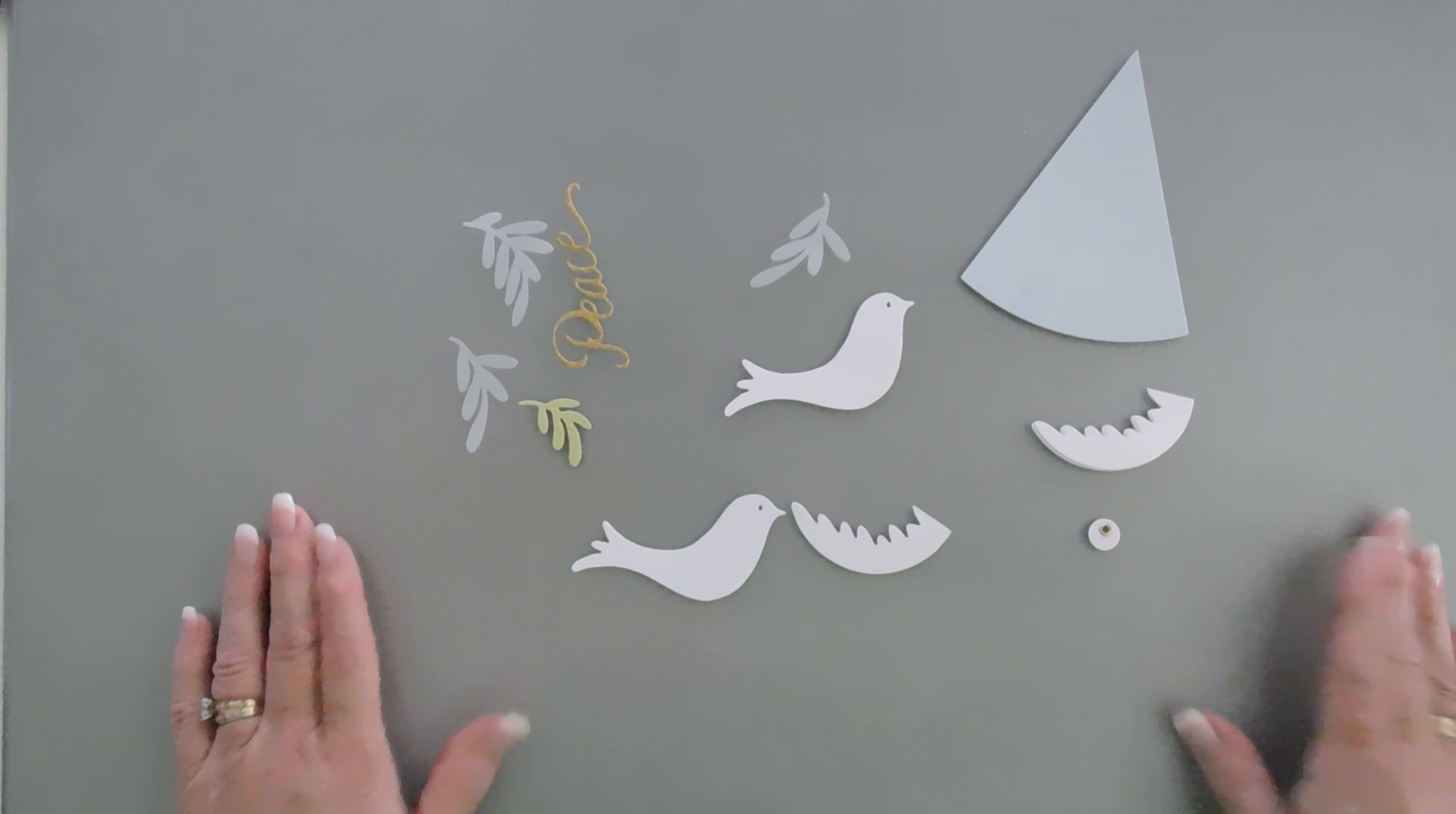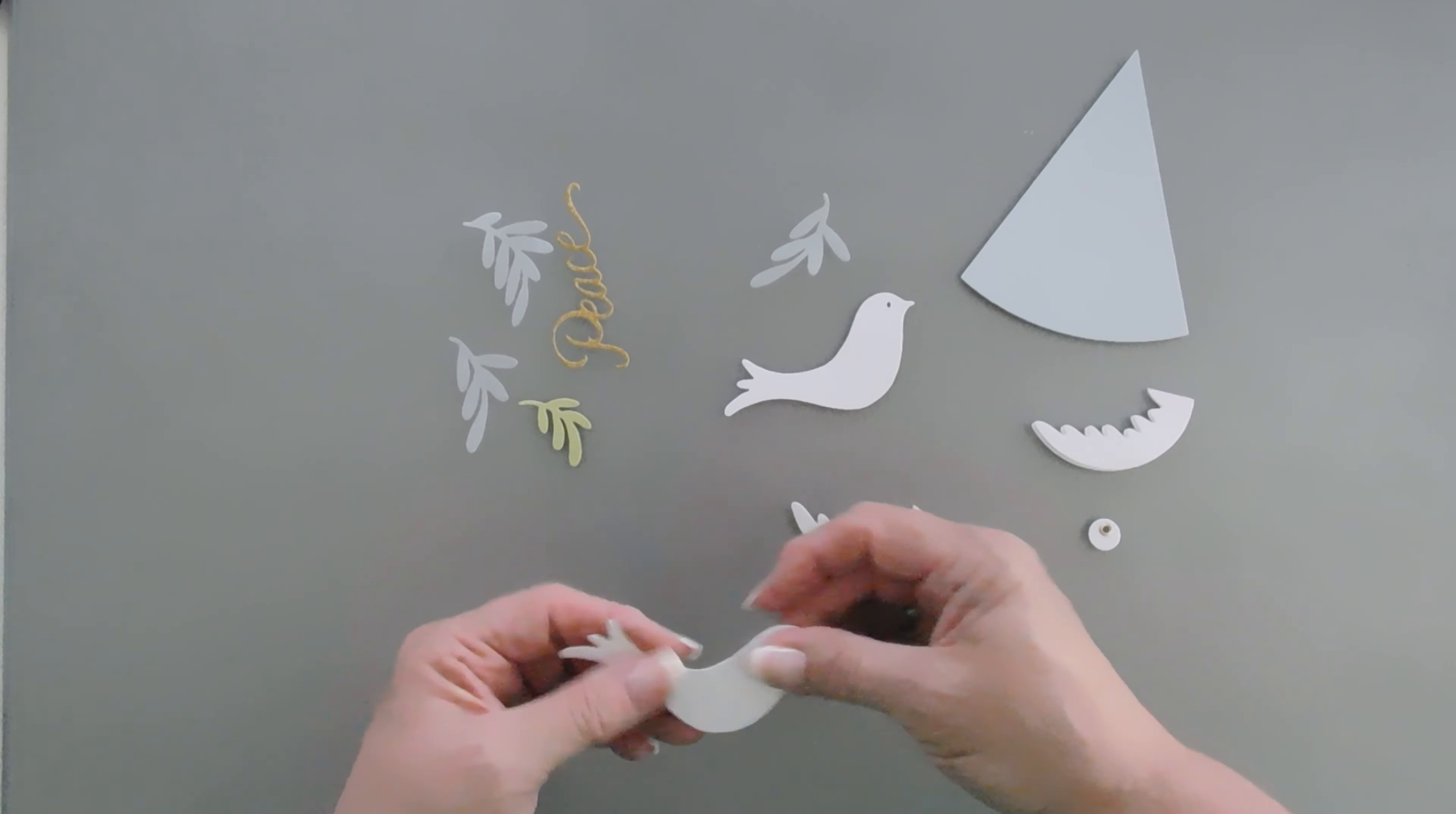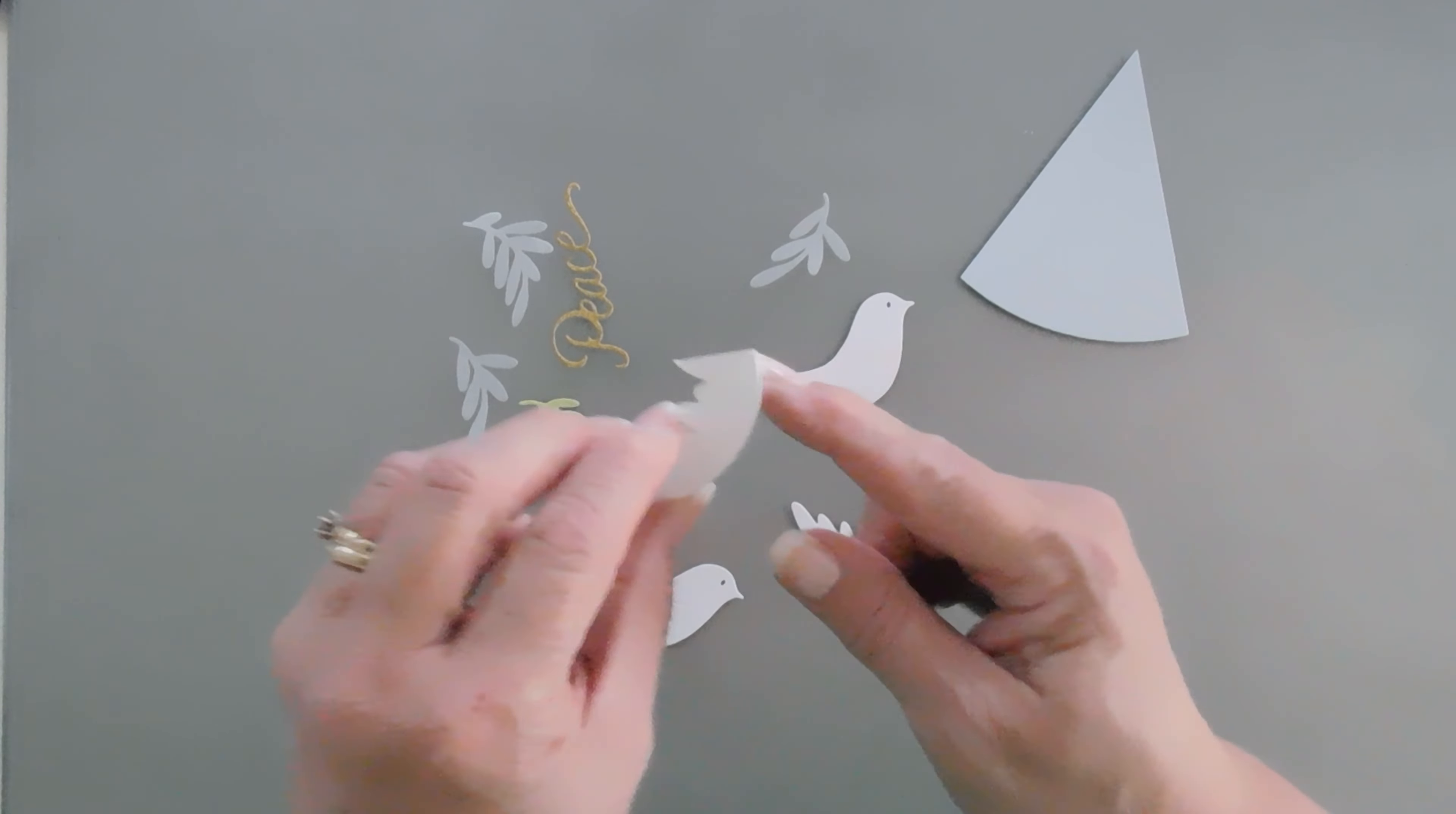I have a fun project to share with you. We're going to create a Christmas card. Today we're going to be using a die set from Stampendis. This is called Peace Dove.